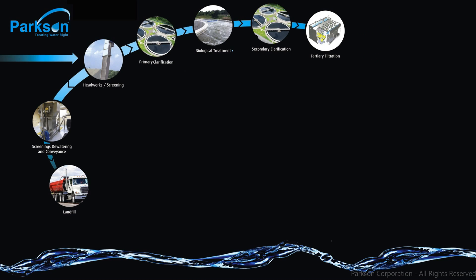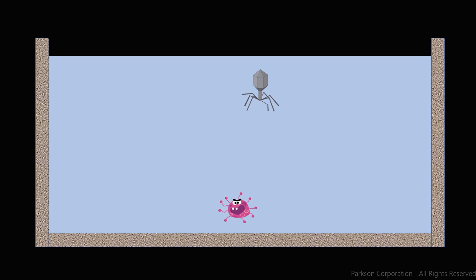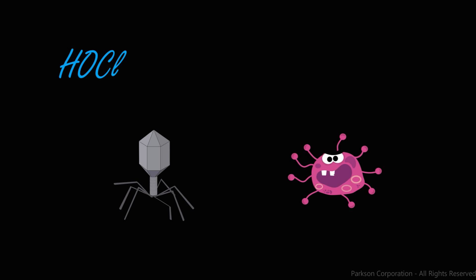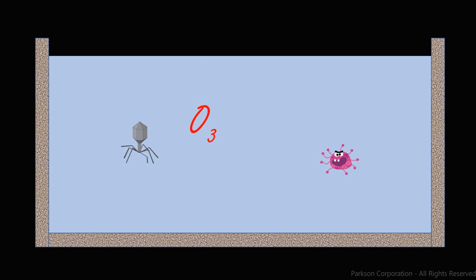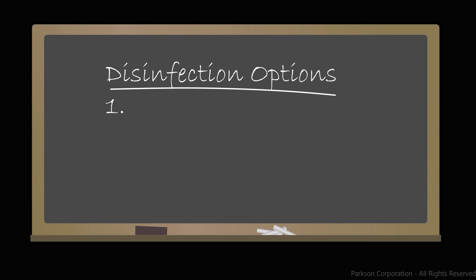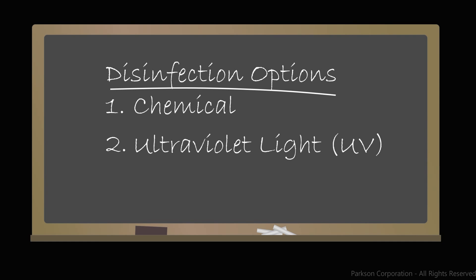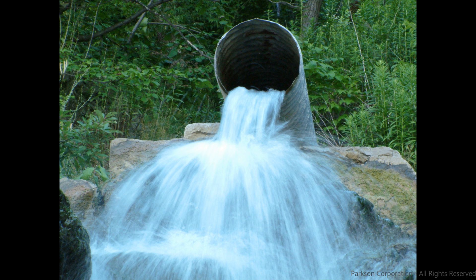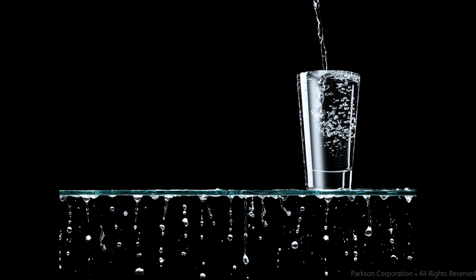With tertiary filtration complete, our only step left on this treatment path is to get rid of our last guests, pathogens and viruses. We can do this in a couple of ways. One way is to introduce a highly reactive chemical to the water, such as an oxidant — most commonly chlorine or ozone. When the chlorine or ozone comes in contact with a pathogen or virus, it reacts with and kills them. We introduce the chemical, then give it time to find all the living organisms. This is done in a contact tank or basin. Another option commonly used is to introduce water to UV light, which when strong enough, will kill these organisms. Once we have successfully deactivated the pathogens and viruses, our treatment step is complete. This water can then be discharged to the environment, or reused for irrigation, or even drinking water.